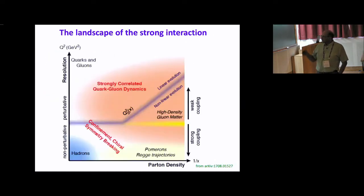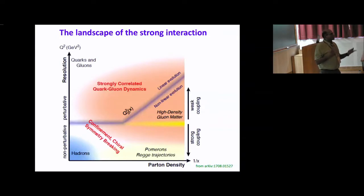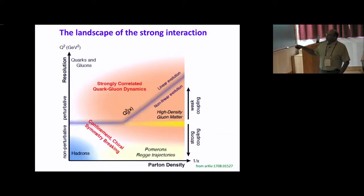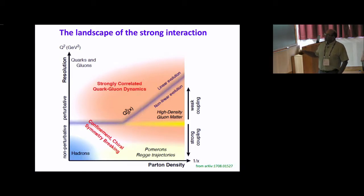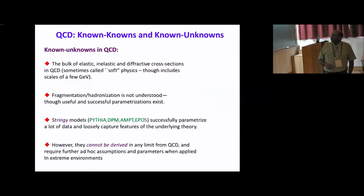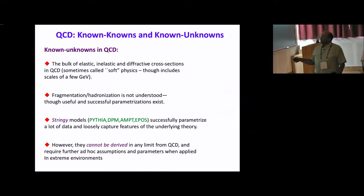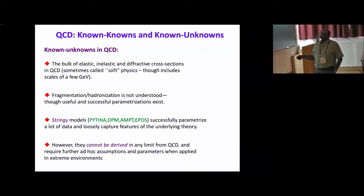These are things we know very well, but as I argued yesterday, that's only some fraction of the total landscape of the strong interaction. Cross sections are not necessarily dominated by these regimes. There's a vast amount of physics we don't fully understand. Today I'm going to zero in on this part of the landscape — very high-density gluon matter. But first let me talk about known unknowns.